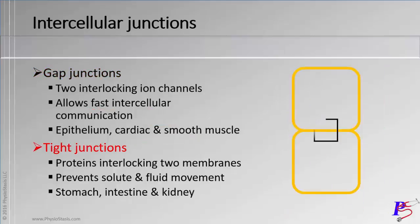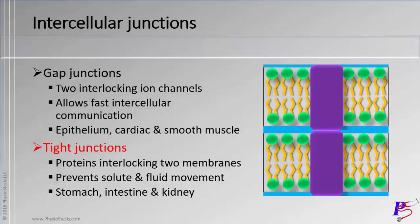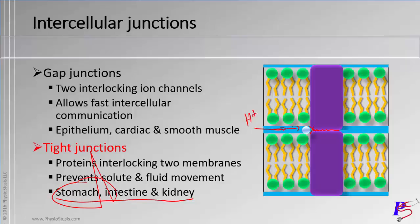The next type of junction are tight junctions. If you think about tight, it means nothing can get through. A solute approaches but can't get through because the junction is really tight and doesn't allow things to pass. This is very important especially in organs like the stomach — if stomach acid were trying to get through to the lining of the stomach, it would damage the lining and create an ulcer. So these tight junctions will prevent ulcers. They are also very important in the kidney. And that concludes this video.